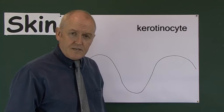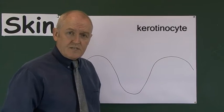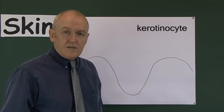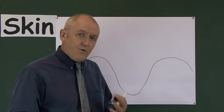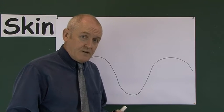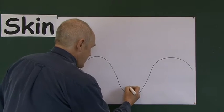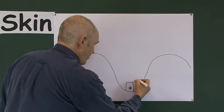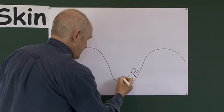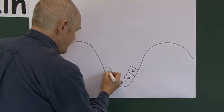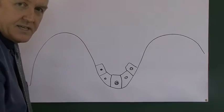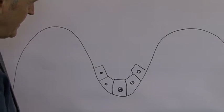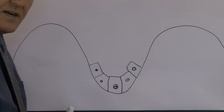They're called keratinocytes because they produce a lot of the horny, hard protein called keratin. But when first formed, they don't contain keratin. They first form down in the basal layer and are cuboidal to columnar in shape. Here we have the keratinocytes on the basement membrane zone.